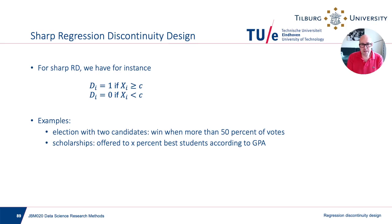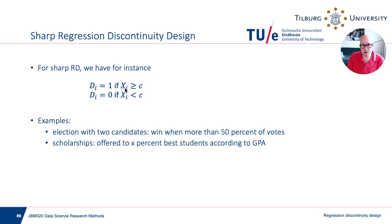For the sharp regression discontinuity design, d is equal to 1 if xi — an observed variable — is at least equal to a constant little c. So xi is observed and the constant little c is known. It could also be the other way around: d equals 1 if x is just below the constant. Otherwise d equals 0. So x determines completely whether somebody is treated.